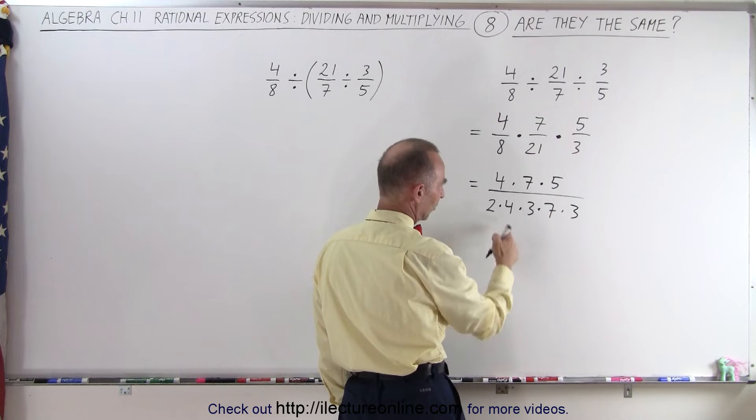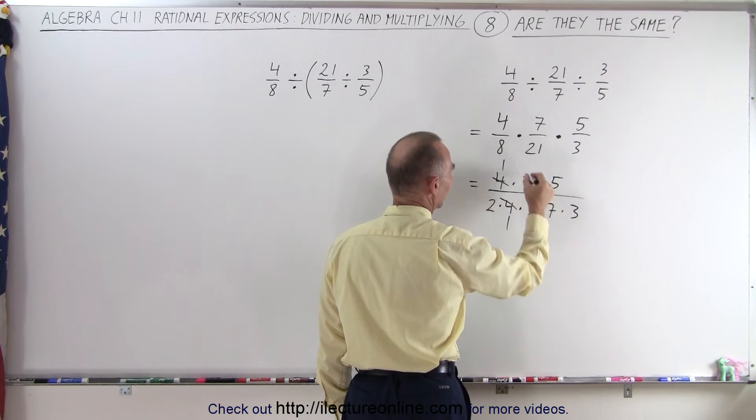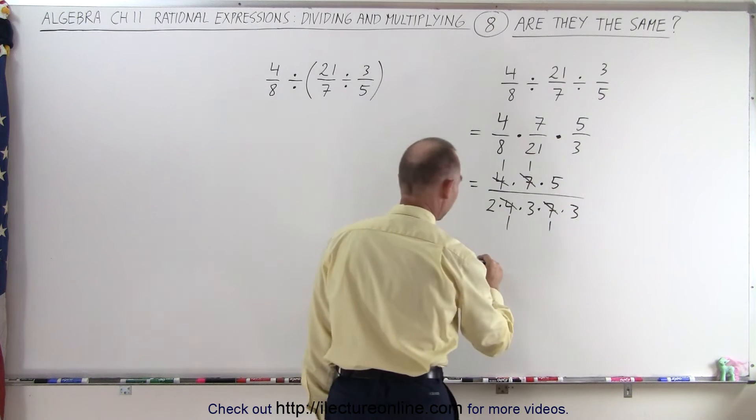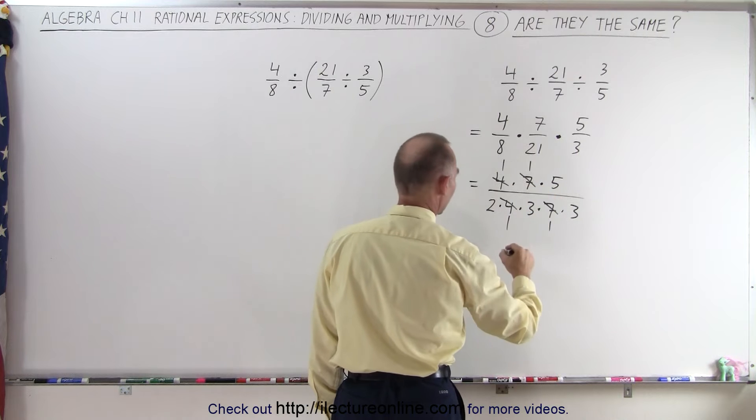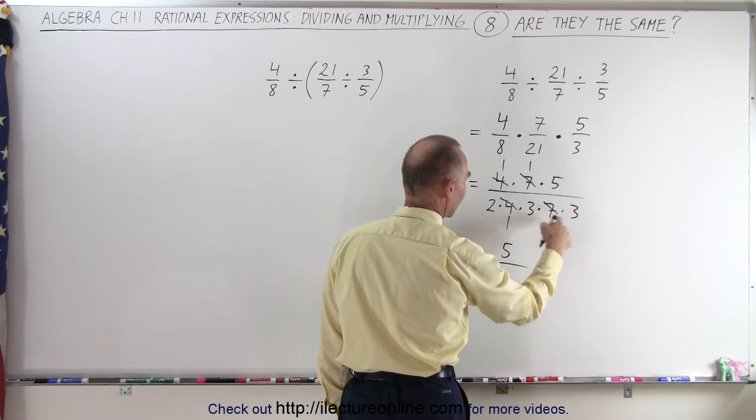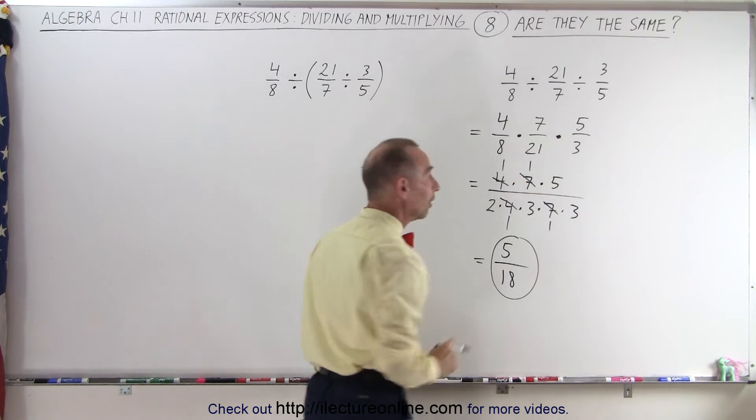Now let's simplify it as much as possible. The 4 and the 4 cancel out, the 7 and the 7, that's all we can simplify. So what do we have left in the numerator? 1 times 1 times 5, divided by the denominator, 2 times 3 is 6, times 3, which is 18. And that's the simplified form of that expression.